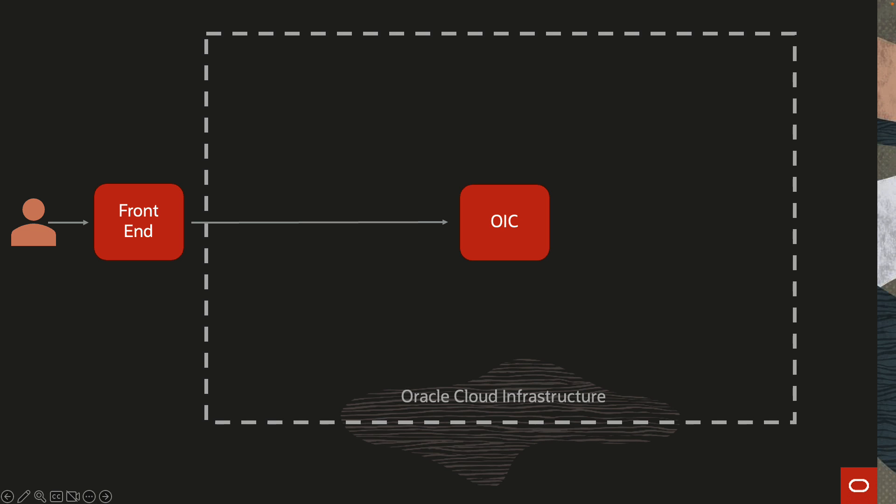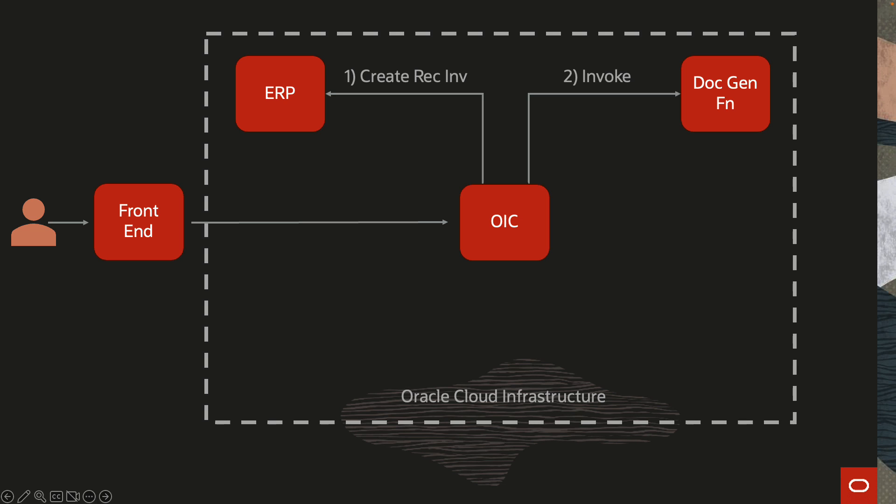Let's take a quick look at the use case. In today's demo, what I'm going to show is whatever is within this box. Imagine there is a front-end — this could be a cloud service, this could be APEX, this could be any front-end. The user submits a request and an integration flow is triggered. In this example, the user is submitting an order, and for that the integration is going to create an invoice with an ERP and generate a document for that invoice.